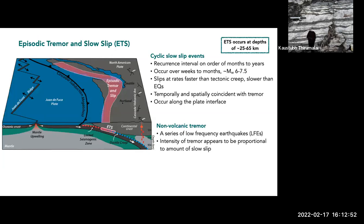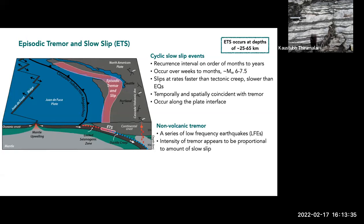Here is a cartoon of my favorite subduction zone, Cascadia. You can see here is Seattle, here is the Juan de Fuca plate subducting underneath the North American plate, and this is the zone where we have episodic tremor and slip at the transition between the locked seismogenic zone and where we have ductile deformation. ETS consists of cyclical slow slip events with recurrence intervals on the order of months to years. Different subduction zones and different segments of the same subduction zone have different recurrence intervals. Individual events can occur over weeks to months — that's why they're often called slow earthquakes.